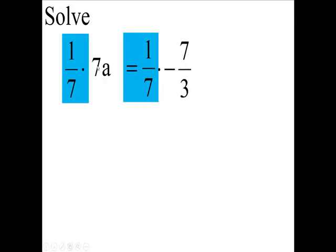Now 1/7 of 7 is 1. So you end up with 1 times a is a. And you end up with the right side over here.